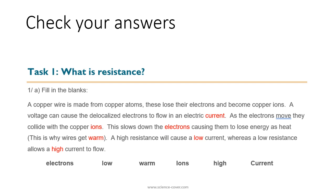Let's check our answers to task one. A copper wire is made from copper atoms. These lose their electrons and become copper ions. A voltage can cause the delocalized electrons to flow in an electric current. As the electrons move they collide with the copper ions. This slows down the electrons, causing them to lose energy as heat — this is why the wires get warm. A high resistance will cause low current whereas a low resistance allows a high current to flow. The missing words are: current, ions, electrons, warm, low, and high.